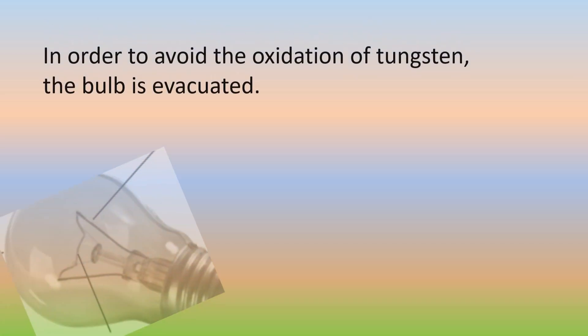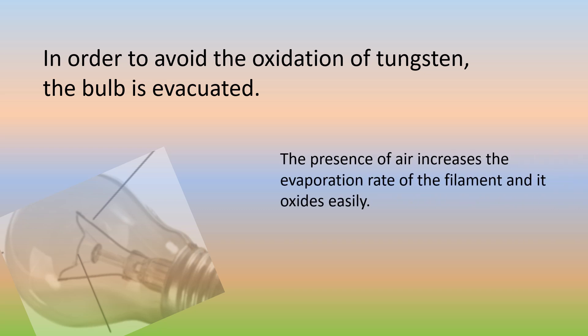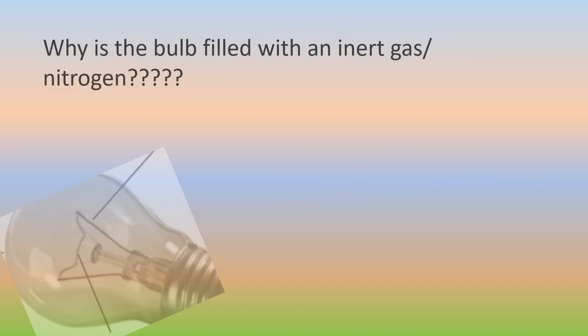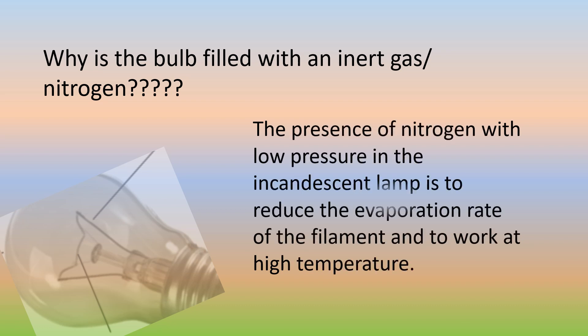Can you guess why is the interior of the bulb evacuated? In order to avoid the oxidation of tungsten the bulb is evacuated. The presence of air increases the evaporation rate of the filament and it oxidizes easily. The bulb is filled with nitrogen because the presence of nitrogen at low pressure in the incandescent lamp reduces the evaporation rate of the filament and allows it to work at high temperature, increasing the lifetime of the filament bulb.